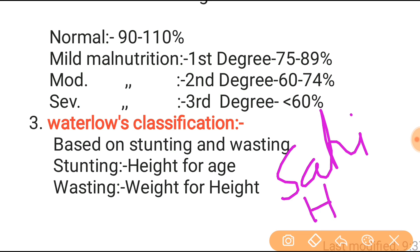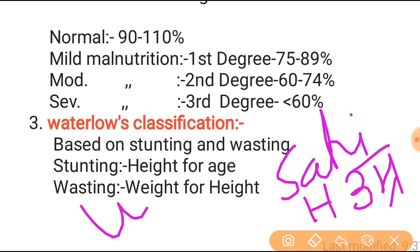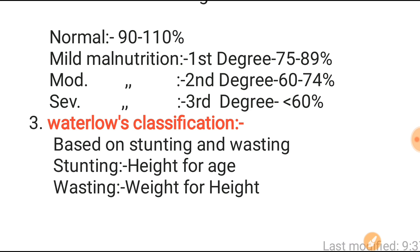To remember the difference, use this trick: 'Sahih hai umr' — stunting is height for age (umr = age), and for wasting remember WWH: weight for height. Thanks for watching my video.